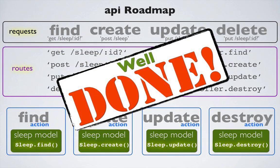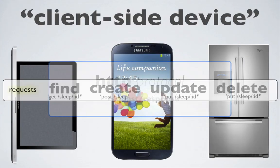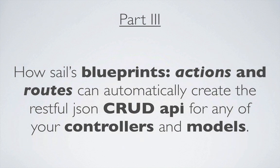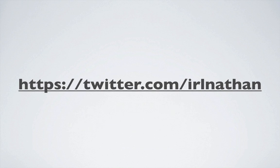Within the Postman Chrome extension, making a DELETE request to the path slash sleep slash five — after sending, the API responds with the model instance it just deleted, formatted as JSON. Congratulations — you've built a RESTful JSON CRUD API from scratch. Any client-side device that supports HTTP requests can now hit our API's endpoints and request and submit information about our sleep model. In the next and final episode, I'll show you how Sails blueprints, actions, and routes can be used to create the same RESTful JSON CRUD API automatically for any of your controllers and models. Thanks for watching, and if you get a chance, follow me on Twitter at Earl Nathan.